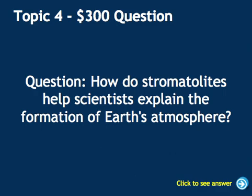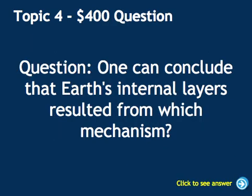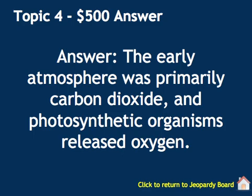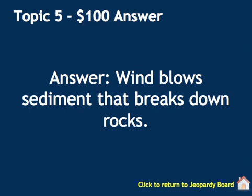How do stromatolites help scientists explain the formation of Earth's atmosphere? Stromatolites are mounds formed by photosynthetic organisms that added oxygen to Earth's oceans and eventually its atmosphere, telling us how oxygen got added. One can conclude that Earth's internal layers resulted from which mechanism? The answer is differentiation. Why is it unlikely that Earth's early atmosphere was formed primarily by photosynthetic organisms? Earth's early atmosphere was mostly carbon dioxide, and photosynthetic organisms would have released oxygen. How does wind cause mechanical weathering? Wind blows sediment that breaks down rocks, causing the weathering.